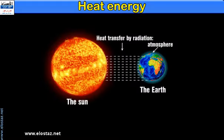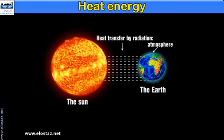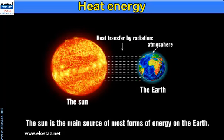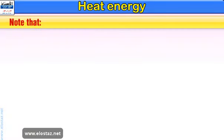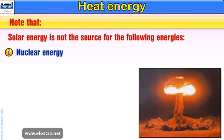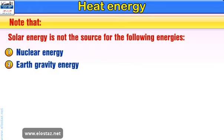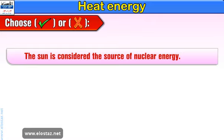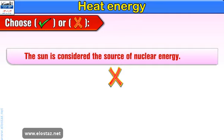After studying all sources and forms of energy in this lesson and the previous ones, we find that the distinct energy form different from any other is solar energy, as the sun is the main source of most forms of energy on earth. However, solar energy is not the source for the following energies: one, nuclear energy; two, earth gravity energy; three, earth core energy. Choose true or false: The sun is considered the source of nuclear energy. Well done — It's false.